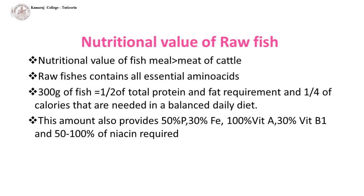When we look at the nutritional value of raw fish, the nutritional value of fish meal is greater than that of meat of cattle. Fish are excellent sources of all essential amino acids needed in the diet. When we take 300 grams of fish, it contains half of the total protein and fat and one-quarter of the calories needed in a balanced daily diet. It also contains 50% of phosphorus, 30% of iron, 100% of vitamin B, 30% of vitamin B1, and 50–100% of niacin.